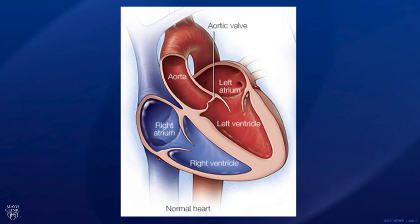Over the course of one's lifespan, the aortic valve typically opens and closes an average of several billion times. There are two main disease categories that can affect the aortic valve during one's lifetime.